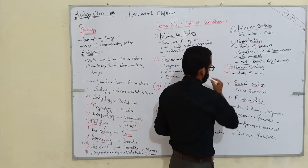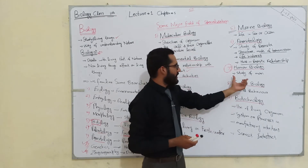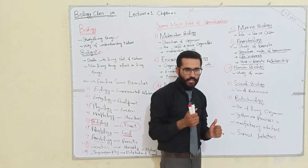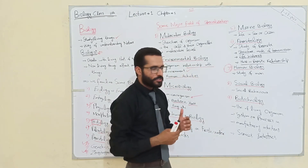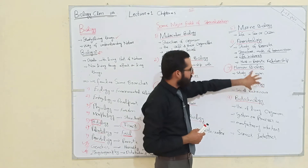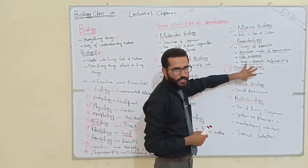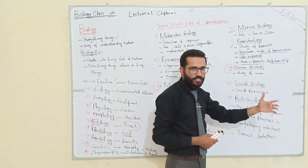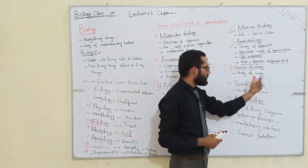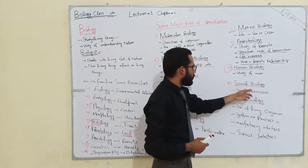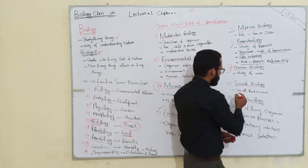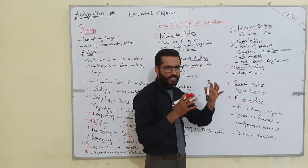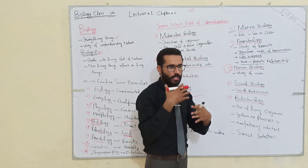Human biology covers the study of genetics, physiology, and other aspects of the human body. Social biology deals with the social behavior of organisms — we study the social behavior of one organism in relation to another organism.